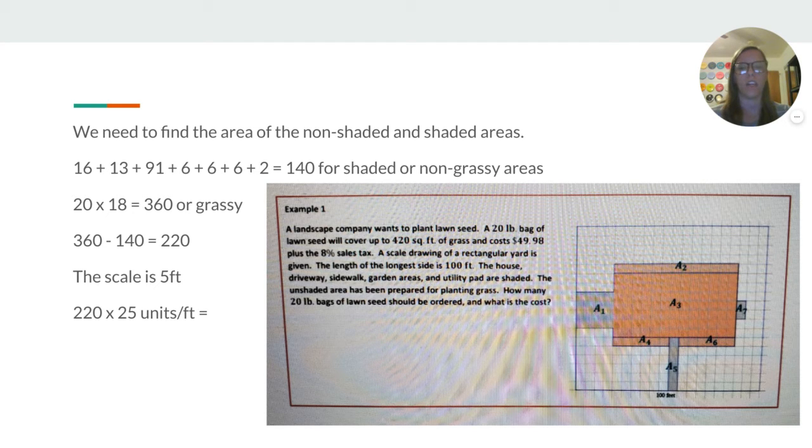And we get 220. So, the scale is 5 feet. So, every cube is 5 feet. So, we take that 220 times 25 units per foot because it's 1 over 5. Let me simplify. We get 5,500.